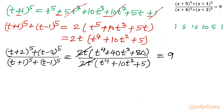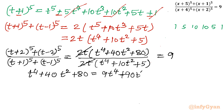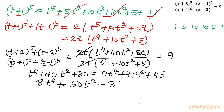The 2t terms cancel from numerator and denominator. After cross multiplying, we get: t^4 + 40t^2 + 80 = 9(t^4 + 10t^2 + 5). Simplifying: t^4 + 40t^2 + 80 = 9t^4 + 90t^2 + 45, which gives 8t^4 + 50t^2 - 35 = 0. This is a quadratic equation in t^2.